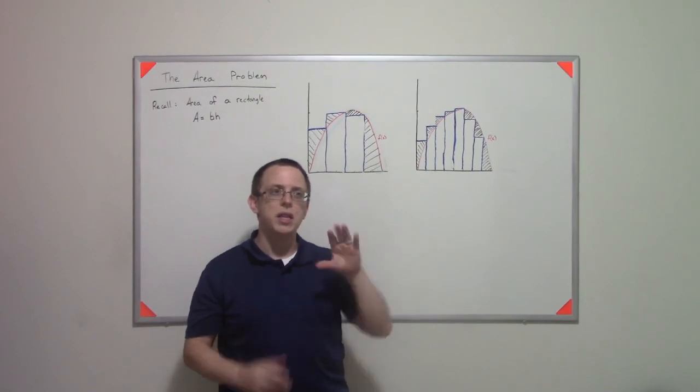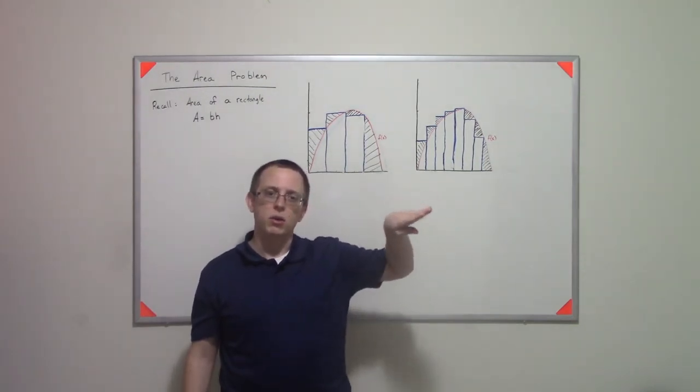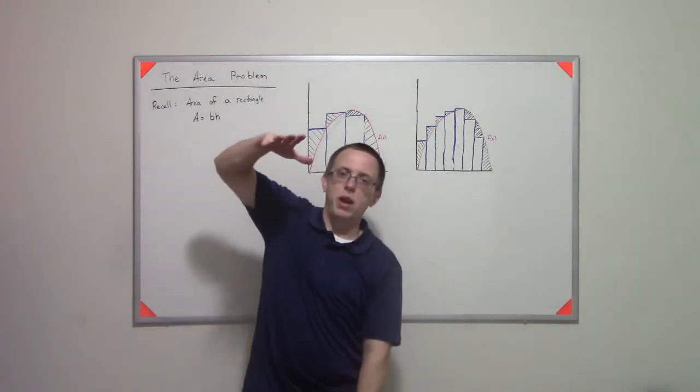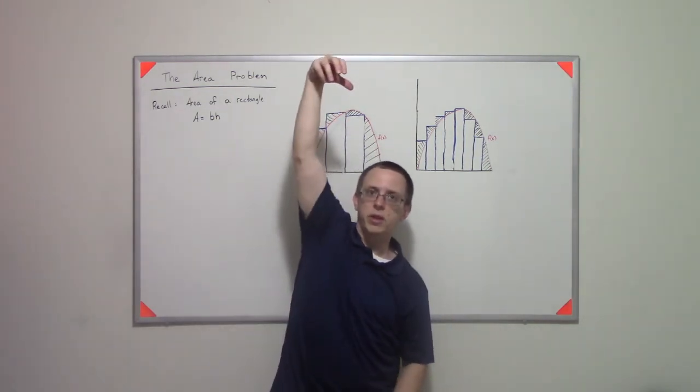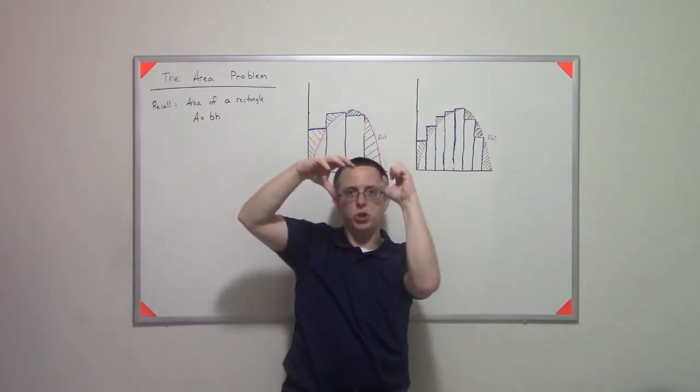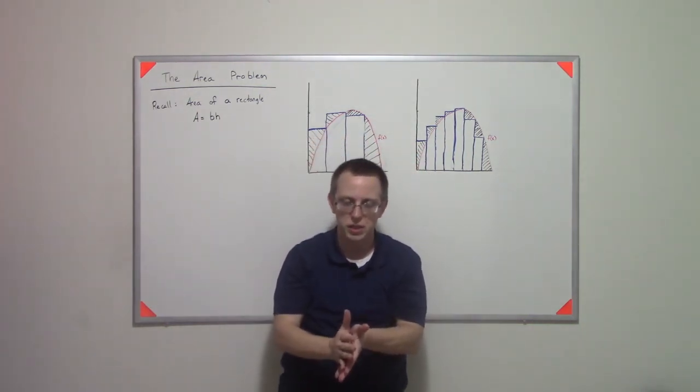So the idea being the error gets cut more quickly than the amount of errors grow. So even though the number of errors is growing this way, the amount of each of them is shrinking so fast that the total error shrinks to zero.